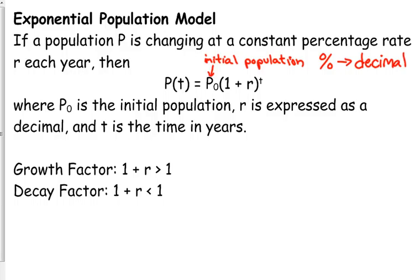One of these models can be used for a population model. So a population P is changing at a constant percentage rate r each year, and this is the model that you can use. P sub zero is the initial population, whatever you start with, whether it's a population of people or bacteria, or whatever that population may be, that initial is P₀.